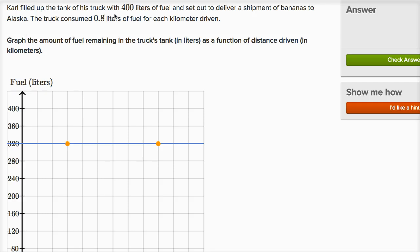Carl filled up the tank of his truck with 400 liters of fuel and set out to deliver a shipment of bananas to Alaska. The truck consumed 0.8 liters of fuel, or eight-tenths of a liter of fuel, for each kilometer driven.